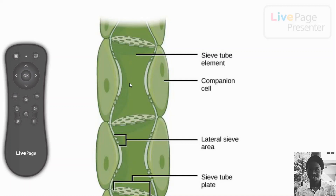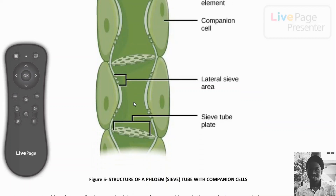The process by which sieve tubes carry materials from sources to sinks — and this can occur in both directions — is called translocation. The sources may be the site of production, for example the leaves, or storage areas like the cotyledons of germinating seeds. The sinks may be storage areas like roots, fruits, and seeds. The food transported in phloem dissolves in the cell sap contained within the sieve tube elements.